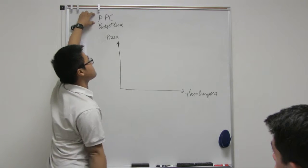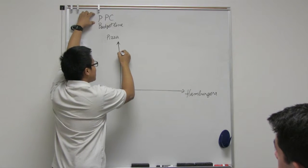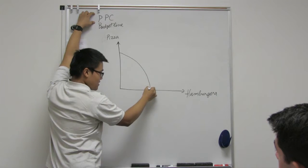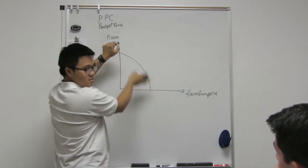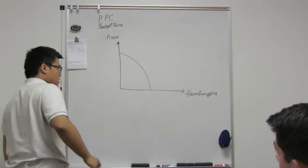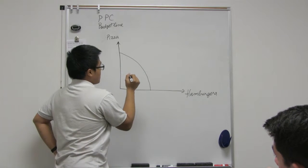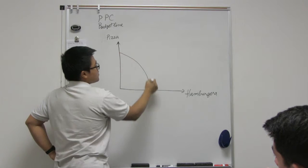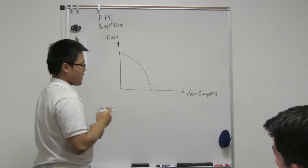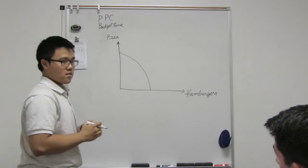You have, let's say, pizza and hamburgers. So basically, you have two goods. Let's look at the PPC first. It looks something like this. It can be a line or it can be a curve. It doesn't matter. It tells you the same thing.